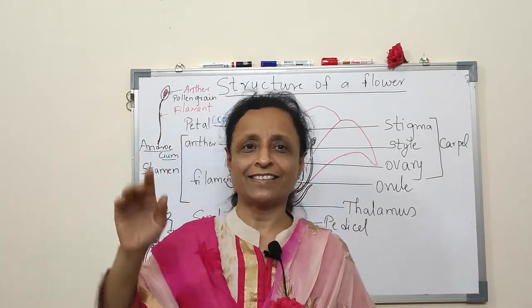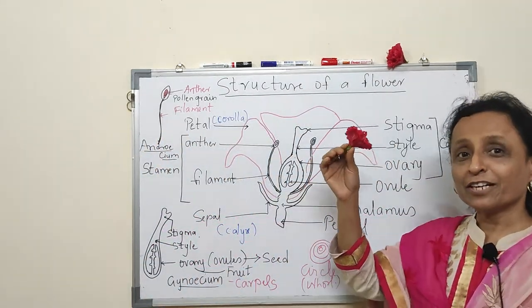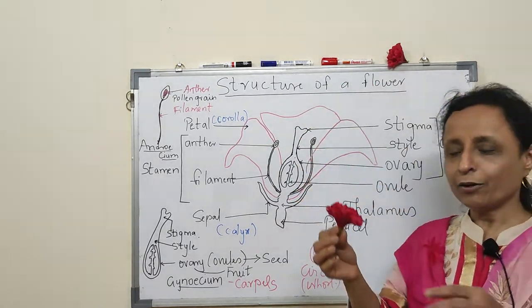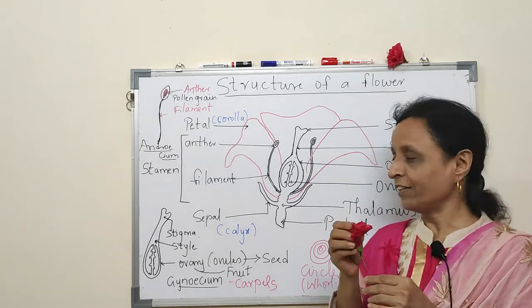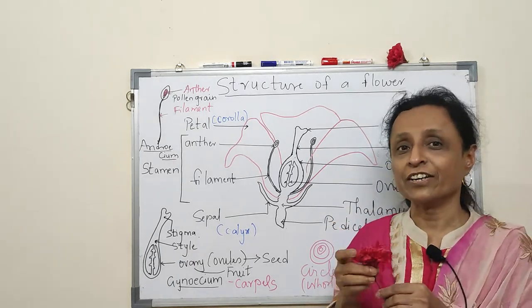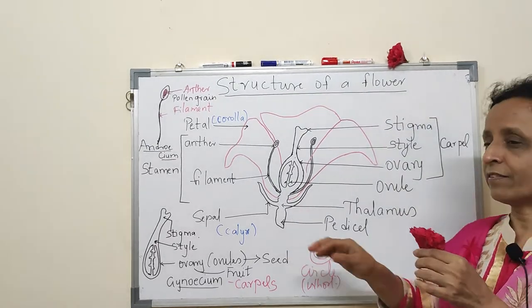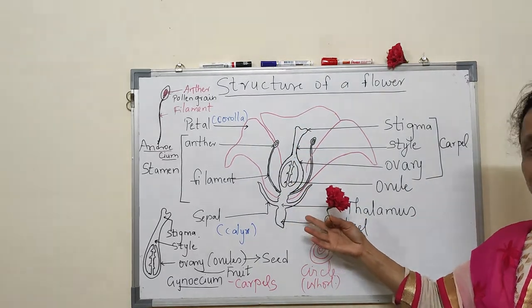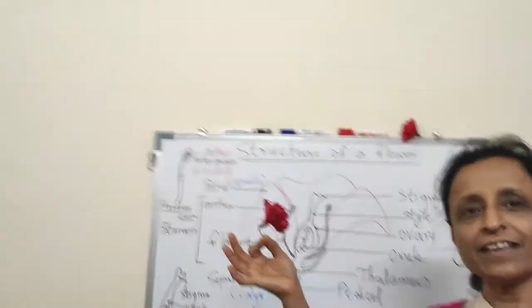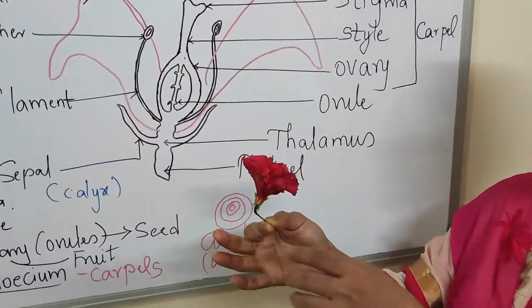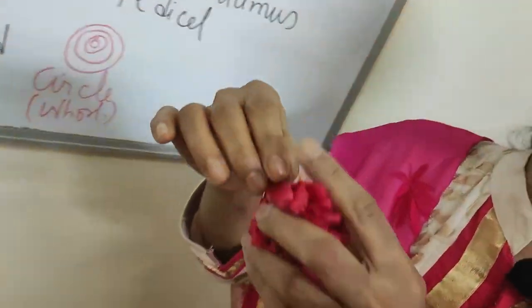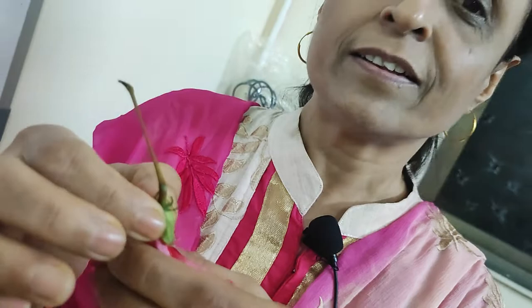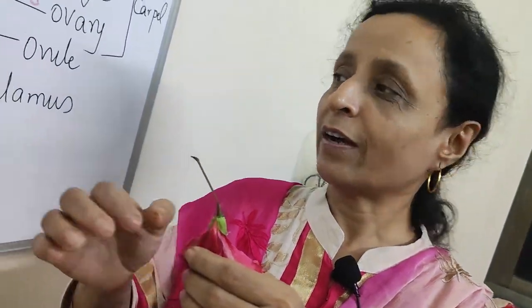Today I'm going to tell you about the structure of a flower — the outer structure and the inner structure. Let us start from the pedicel. What we are holding the flower with is the pedicel — the stick which you can see is the pedicel. As it goes up, you can see the swelling part — that is the thalamus.